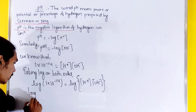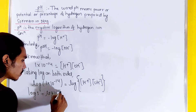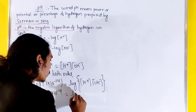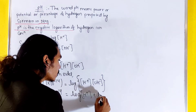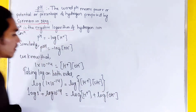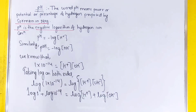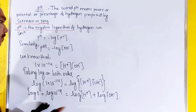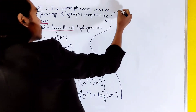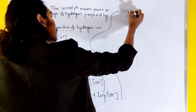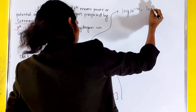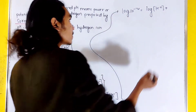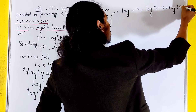Applying mathematics: log 1 plus log 10^-14 equals log [H+] plus log [OH-]. Log 1 equals zero, so log 10^-14 gives us -14 on the left side, and we have log [H+] plus log [OH-] on the right.